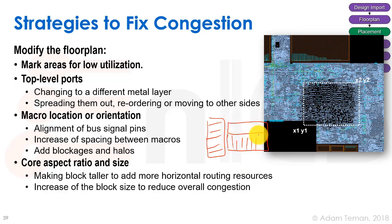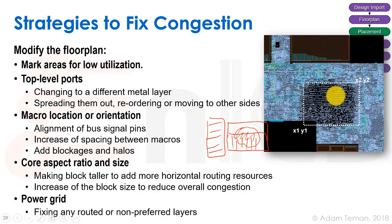We can also resize the floorplan or increase block size, though sometimes a larger floorplan causes the tool to cluster things in one area, creating mid-block congestion that requires partial blockages. Another factor is the power grid: there's a trade-off between how well we distribute power versus how many routing tracks are consumed. We can remove power stripes or cut them in certain areas, but this affects IR drop at each cell.